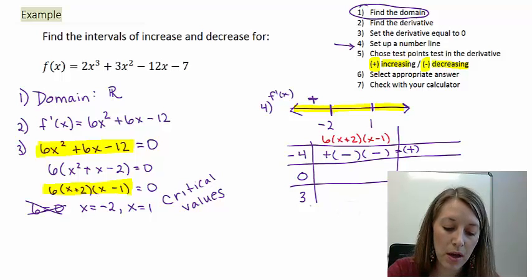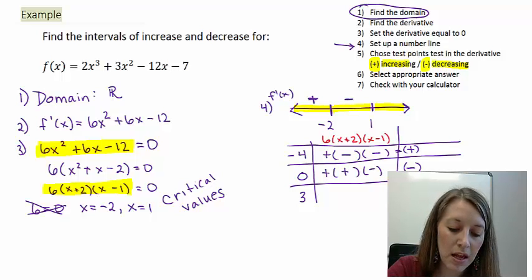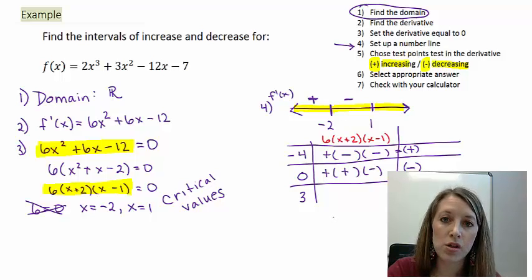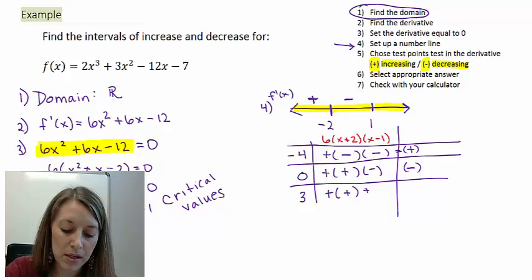Testing x equals 0: 6 is positive, 0 plus 2 is positive, 0 minus 1 is negative. Positive times positive times negative gives a negative result. So in between negative 2 and 1, the derivative is negative and the graph is decreasing. Testing x equals 3: 6 is positive, 3 plus 2 is positive, 3 minus 1 is positive — so the result is positive, and the graph is increasing from left to right in that interval.